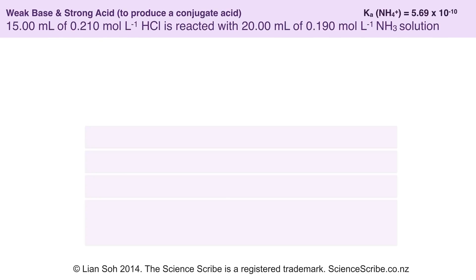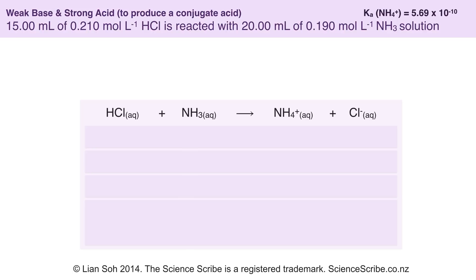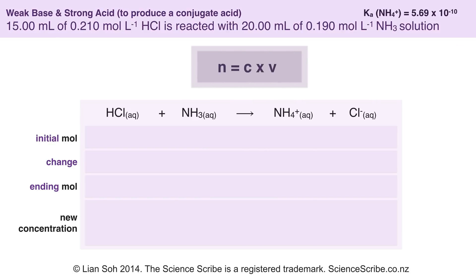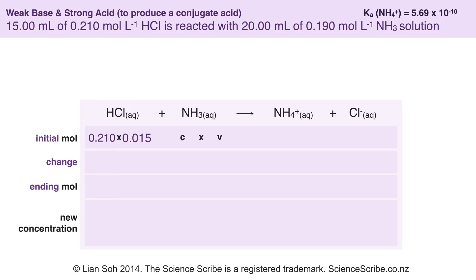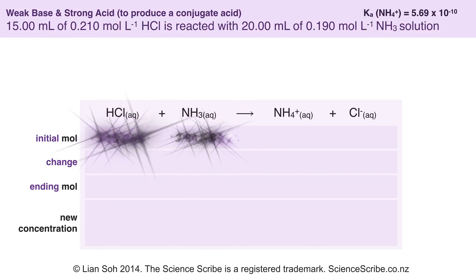In this example, I'm going to show that the formula derived in the first example also works when starting with a weak base and adding a strong acid. When hydrochloric acid reacts with ammonia solution, ammonia is the weak base and ammonium ions are its conjugate acid. I'm going to use an ICE table again — Initial, Change, Ending — and work out the initial amounts using concentration times volume, substituting the numbers in and remembering to work in litres.